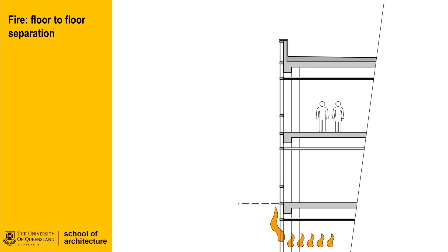Fire in a building is perhaps the single most significant threat to human wellbeing. Being trapped in a burning building a long way from the ground requires a raft of safety strategies and systems that incorporate early detection, sprinklers, and a safe means of escape. The facade plays two roles in this. The first is the management of the spread of fire through the building by the consequence of fire jumping floor to floor.